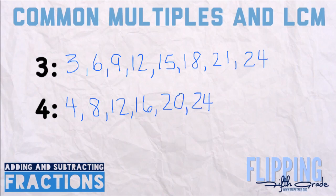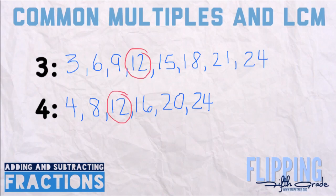Now we're going to look for the common multiples — numbers that occur in both the 3's and the 4's. Going through: 3 and 4 don't match up, 6 and 9 don't match either, but 12 and 12 do. So we'll circle the 12's. Continuing on: 15, 18, 21 — and 24 matches up as well.